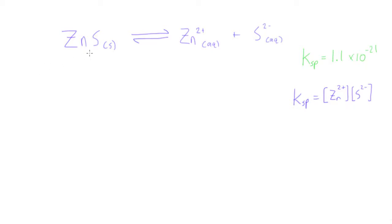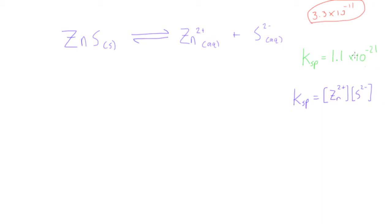In this video we're going to be talking about the common ion effect and how that works with the dissociation of zinc sulfide into zinc ions and sulfide ions. In the last video we did this just in water by itself and found that the molar solubility of zinc sulfide was about 3.3 times 10 to the negative 11 — that was the molar solubility of zinc sulfide in pure water.